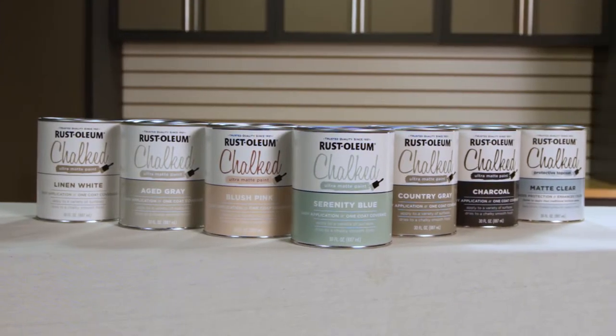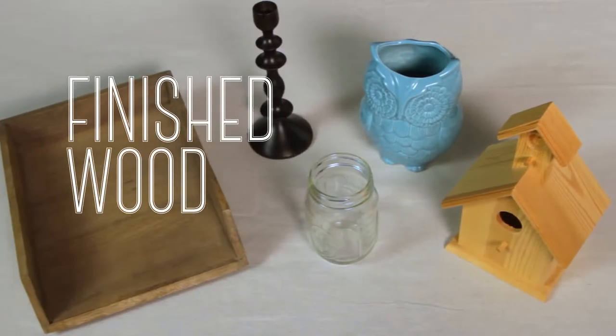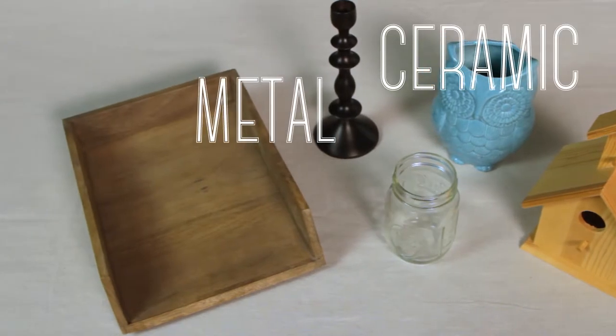Chalked paint is so versatile, it can be used on bare and finished wood, glass, ceramic, metal, and laminate.